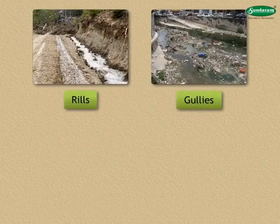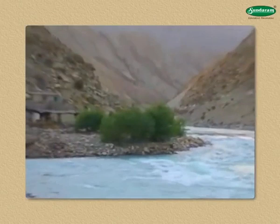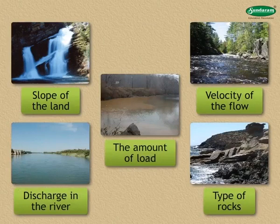Now coming to the work of the river. The intensity of the work of a river depends on the following factors: slope of the land, velocity of the flow, type of rocks, discharge in the river, and the amount of load.